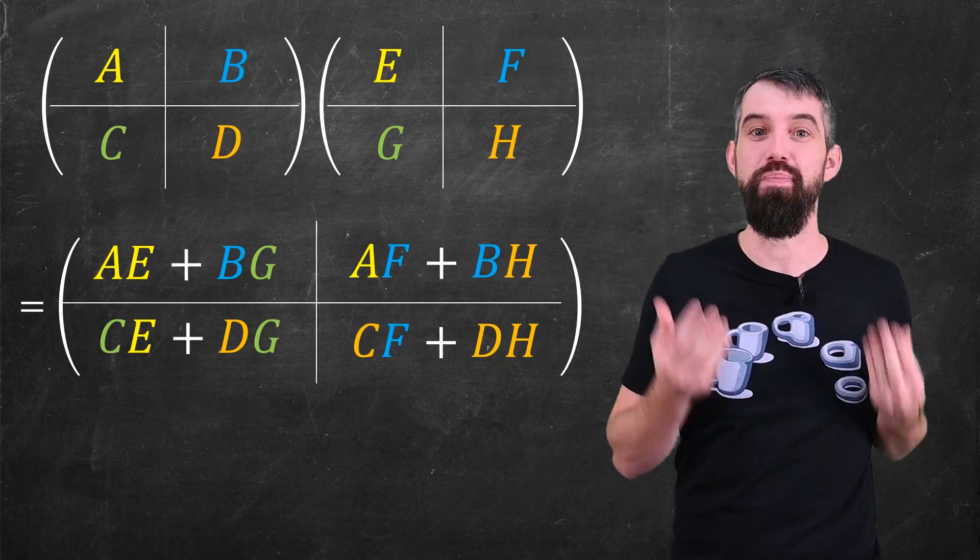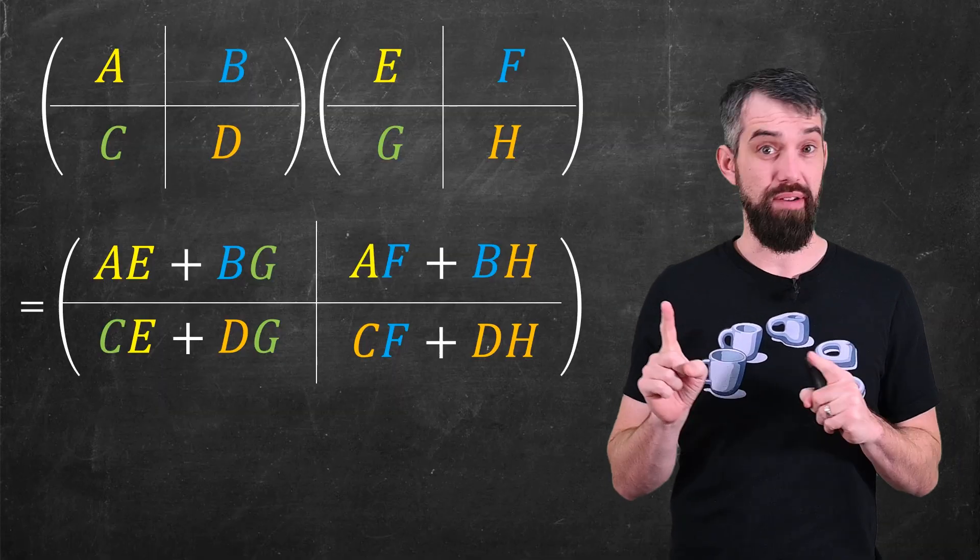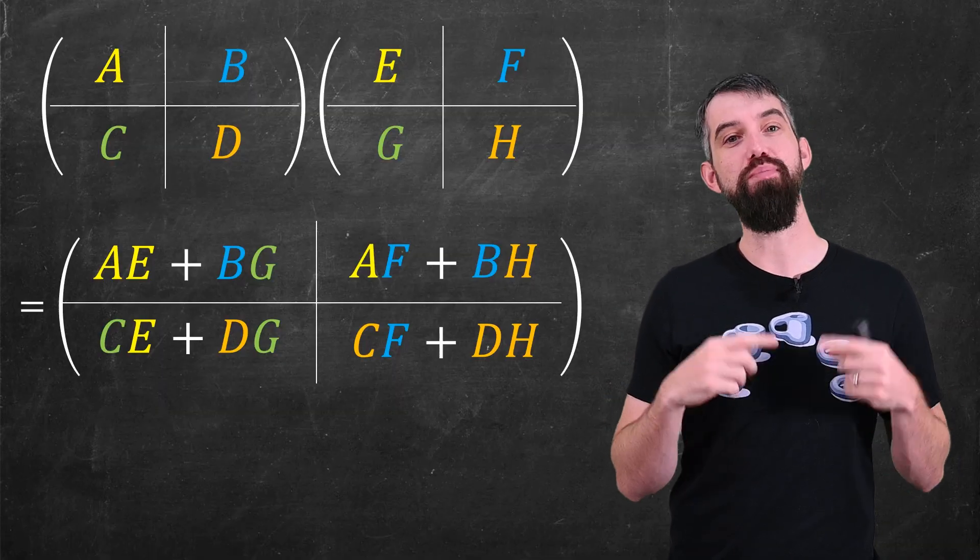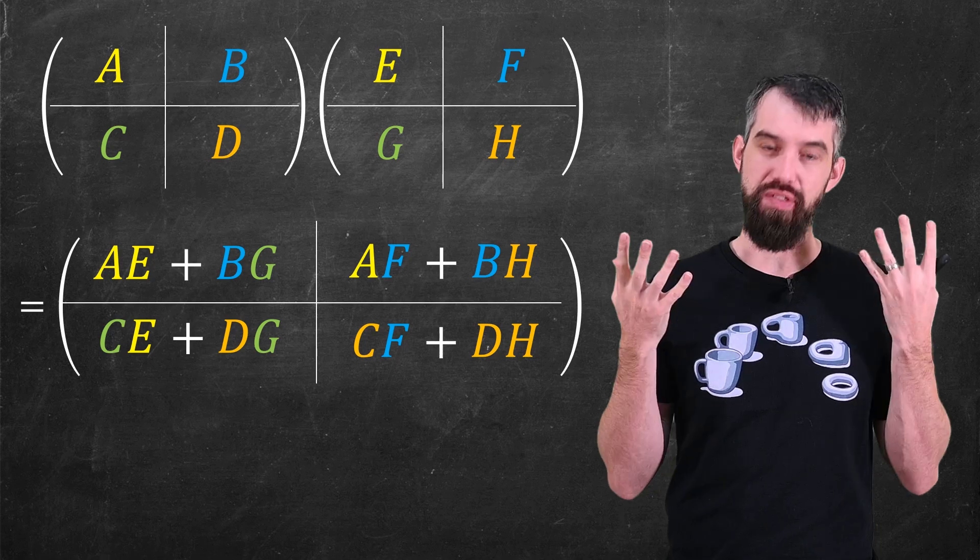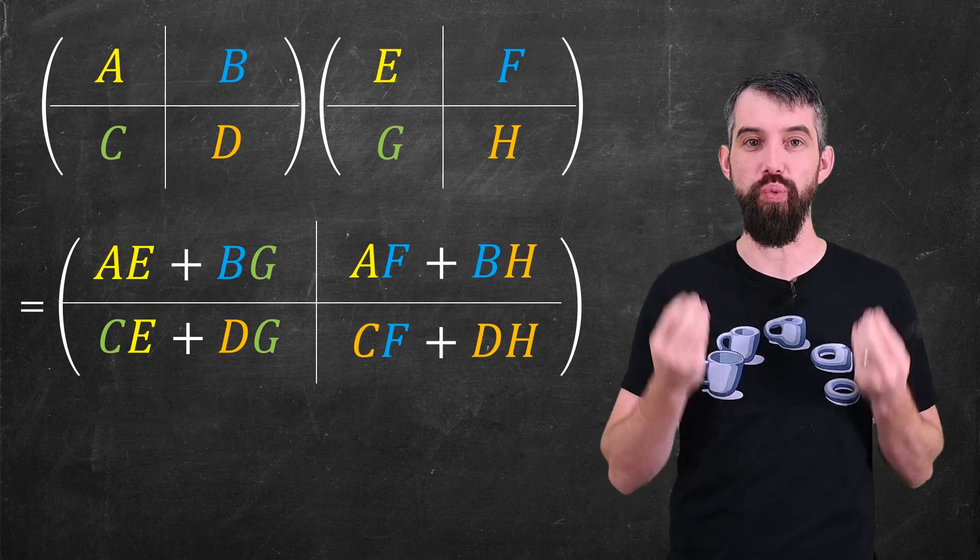You get things like A, E, plus B, G, and so forth. You can check the algebra of this if you wish, but the point is, multiplication of block matrices of the same size works out really nicely. And that lets us state our theorem.